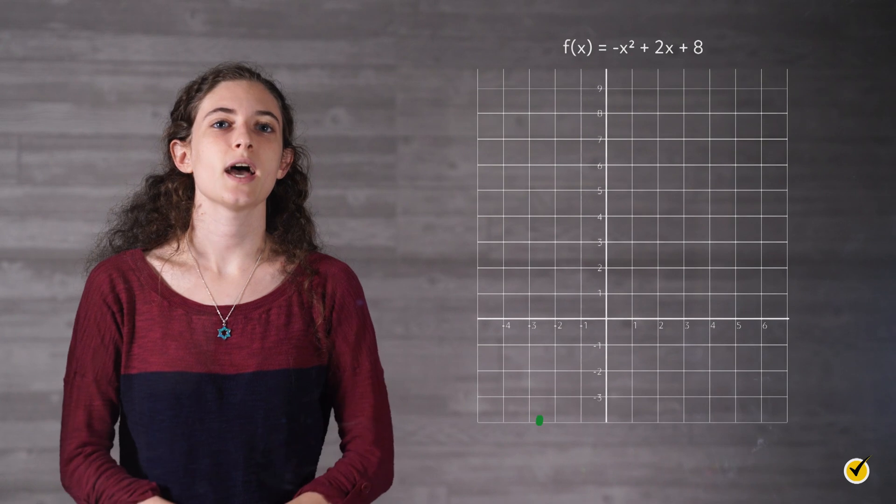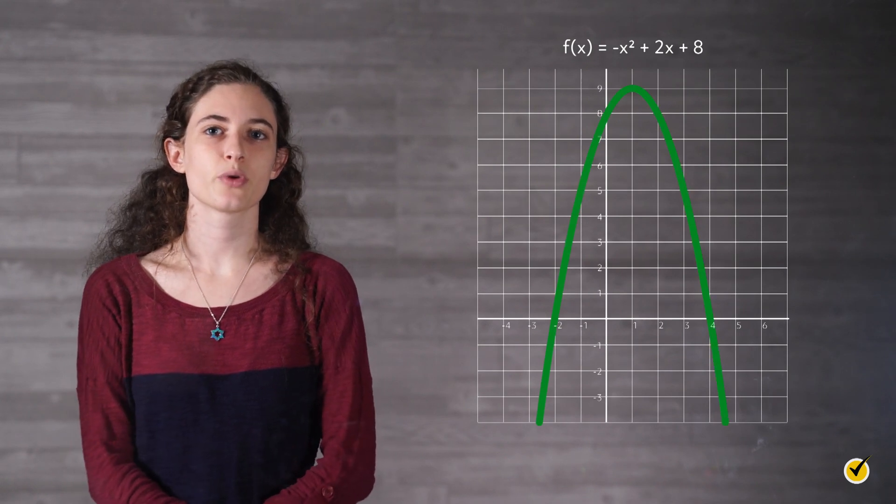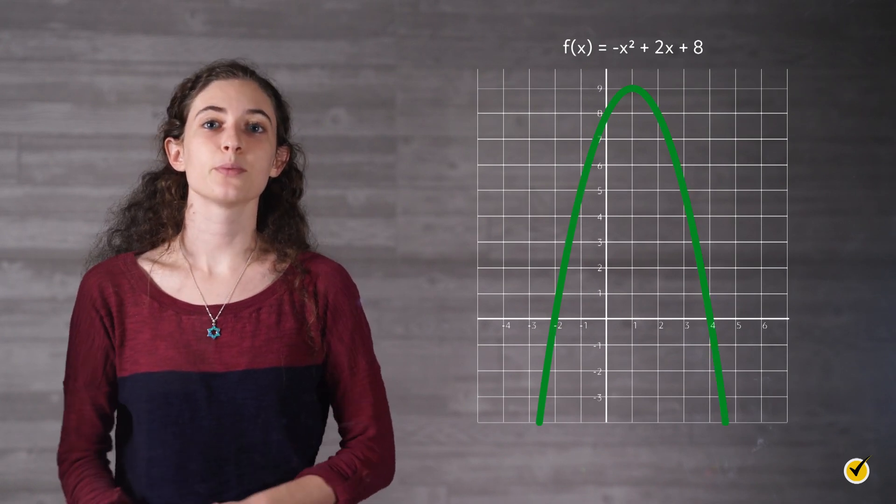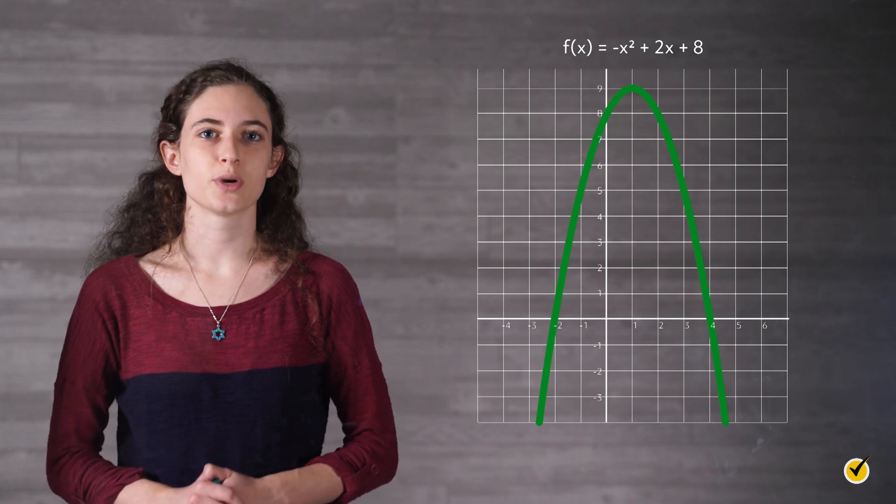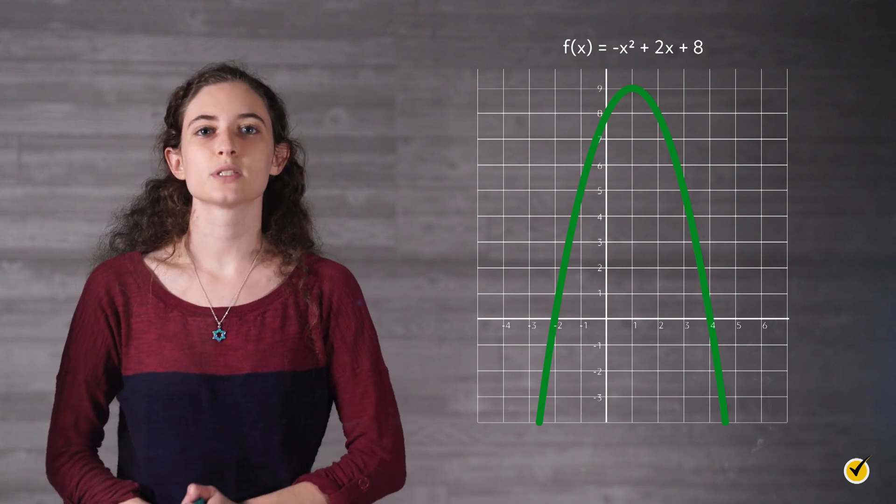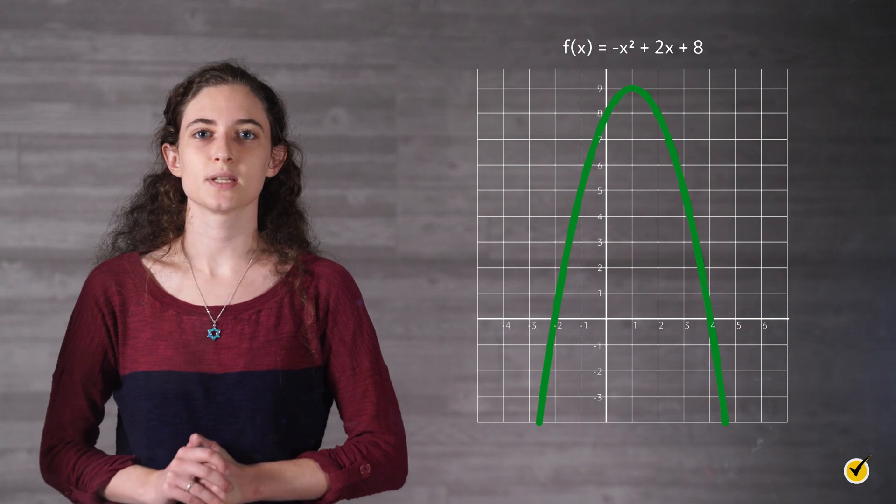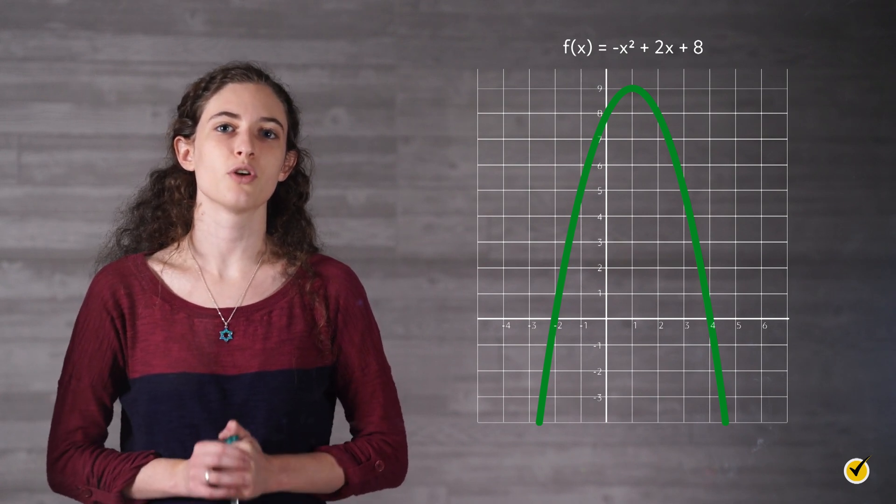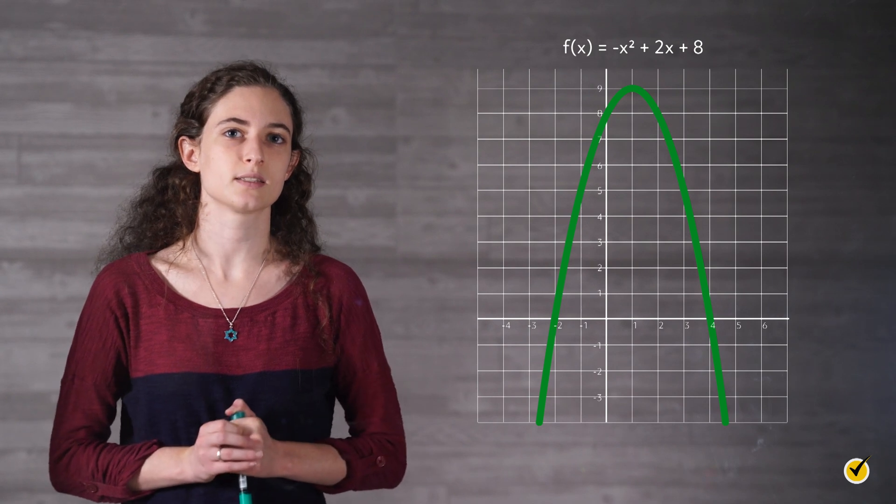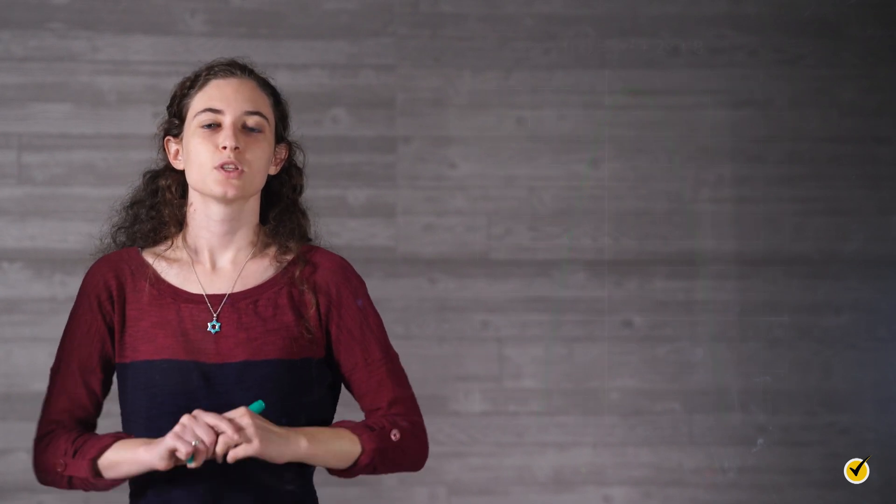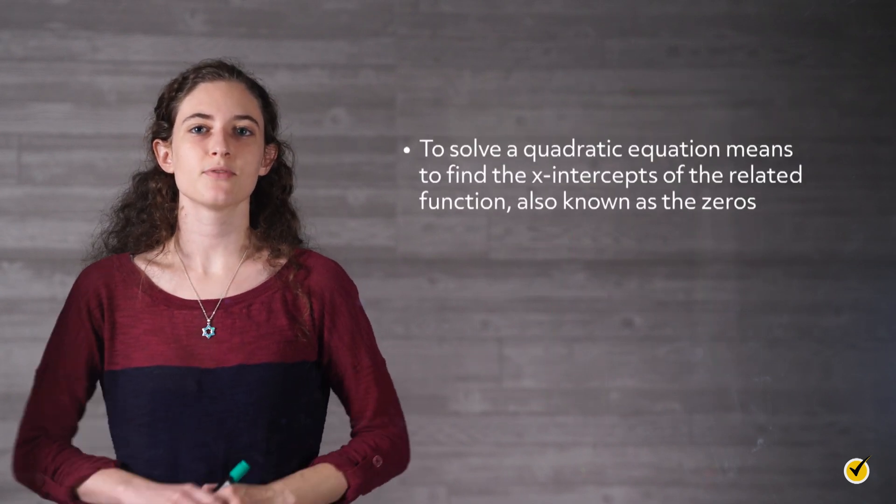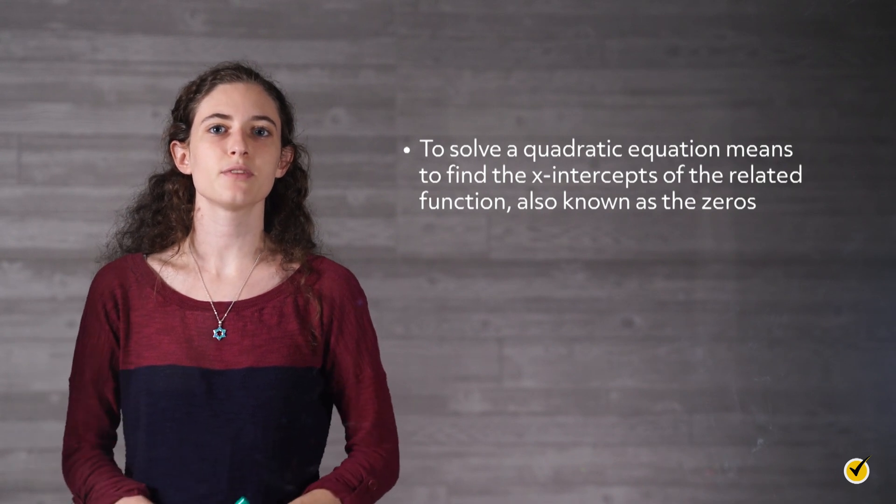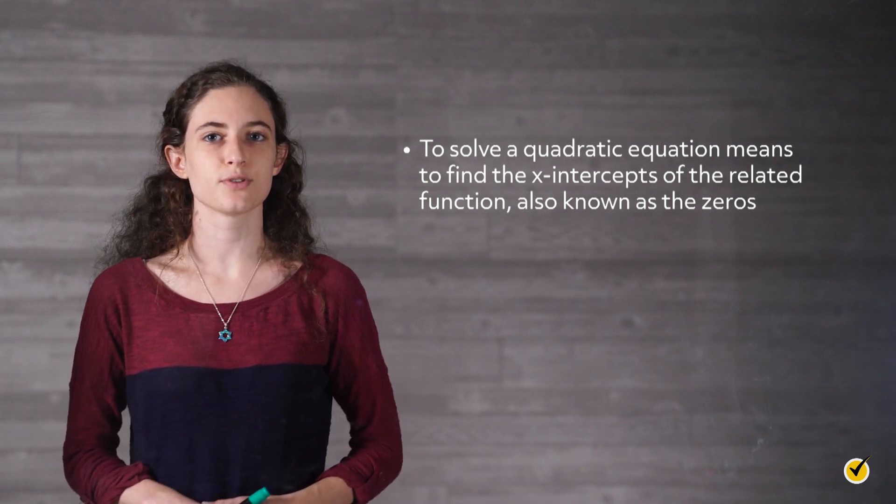This is the function f of x equals negative x squared plus 2x plus 8. Every point on the graph satisfies this equation. Solving 0 equals negative x squared plus 2x plus 8 gives us two solutions because the function equals 0 only when it crosses the x-axis. Here's another way to look at it. To solve a quadratic equation means to find the x-intercepts of the related function, also known as the zeros.